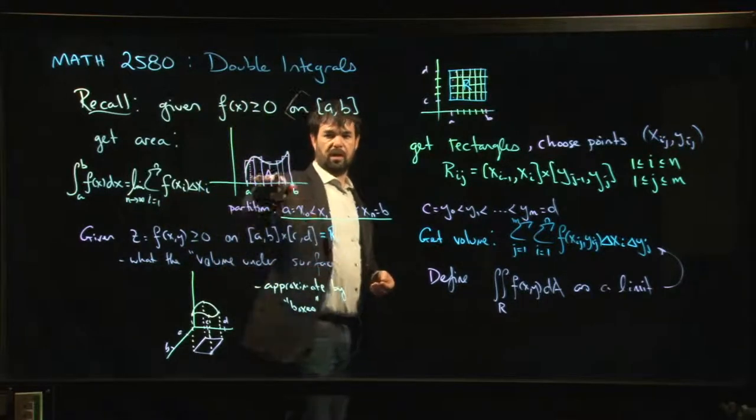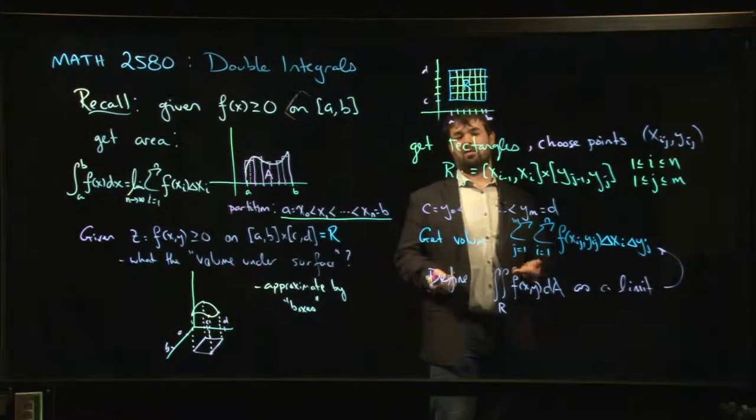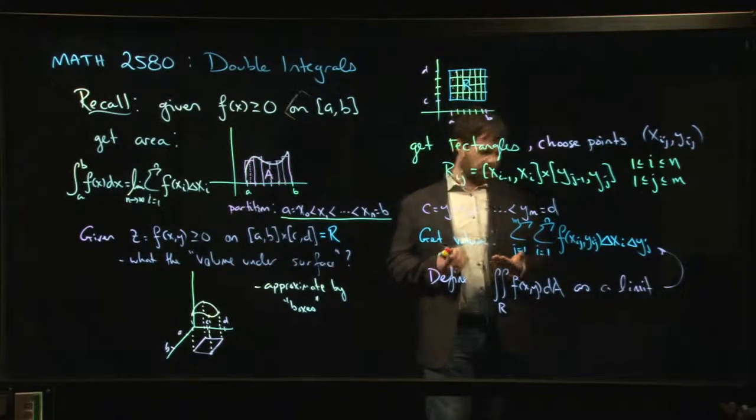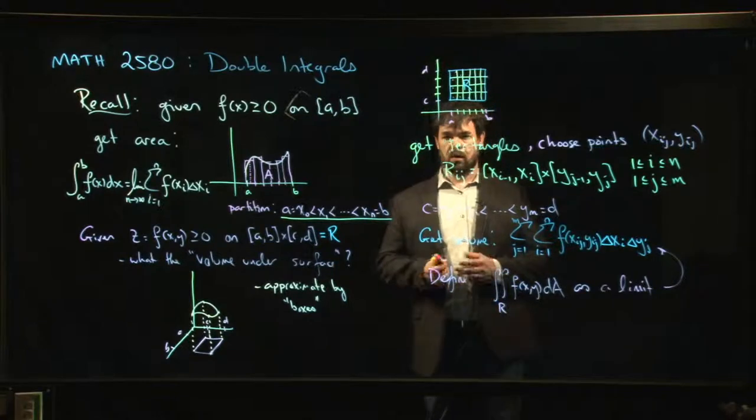So the same thing that you do in one variable. You keep increasing the number of points in your partition, that increases the number of rectangles in this case, boxes in this case, you add up the result, and you look to see if there's some sort of limiting value. If you get a limiting value, that's going to be your integral. Okay. So that's how you would define the integral.